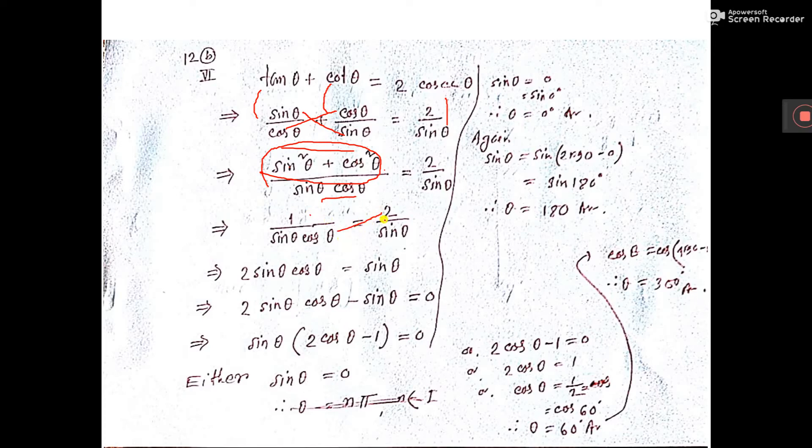Now sin square theta plus cos square theta is equal to 1. So do the cross multiplication, 2 sin theta cos theta is equal to sin theta.